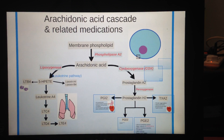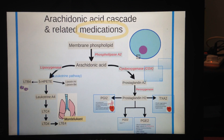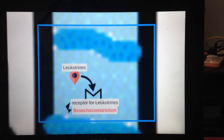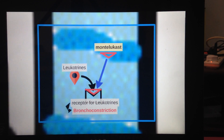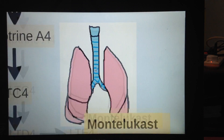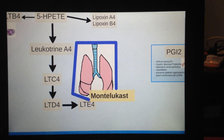Now we're done with the arachidonic acid cascade — simple enough. However, this diagram can be used to explain a lot about medications commonly used today. I'm going to talk about montelukast, which is a common anti-asthmatic drug. What montelukast does is block the receptors for leukotrienes so that leukotrienes cannot bind, and hence there is no bronchoconstriction. It makes sense that montelukast is used as a prophylaxis for asthmatic attacks.